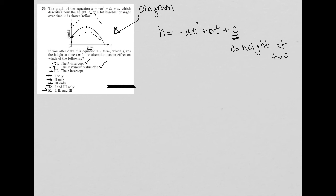Option three says the t-intercept. Well, the t-intercept is where the ball hits the ground. So again, if I'm hitting the ball from different heights, it's very likely, it's highly unlikely I should say...